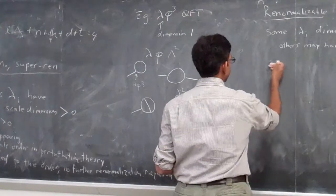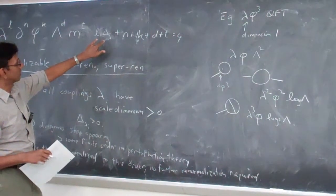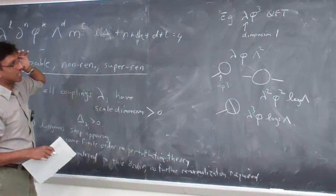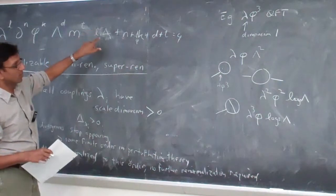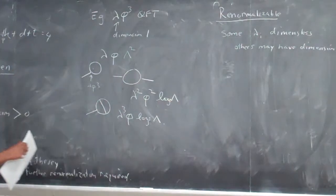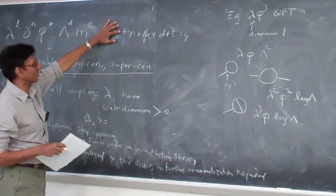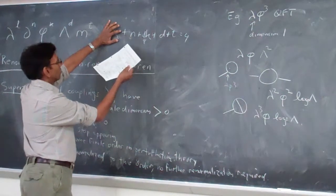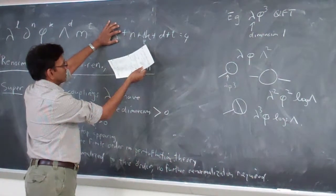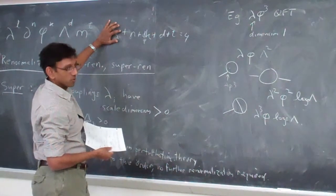You can always get arbitrarily high-order divergences because the coupling in perturbation theory doesn't cost you in mass dimension. Divergences keep occurring order by order because if you keep working with dimensionless couplings, you're not paying a price in soaking up your budget of four — delta is zero. So once you fix the number of derivatives and fields to something less than or equal to four, you can always have positive or zero powers of the cutoff.